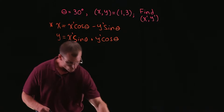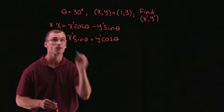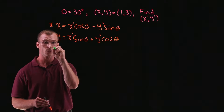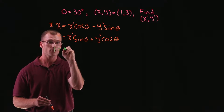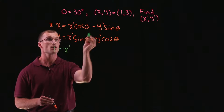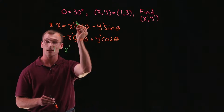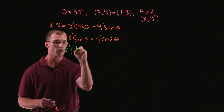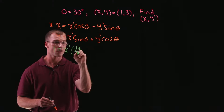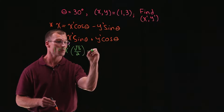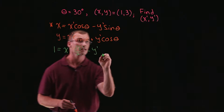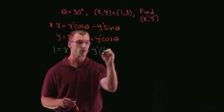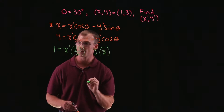Plugging in what we know into our first equation: x is equal to 1, and that equals x prime times cosine of theta — so cosine of 30 degrees is root 3 over 2 — minus y prime times sine of 30 degrees, which is 1 half.